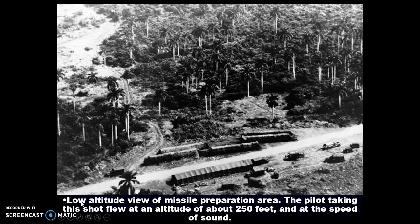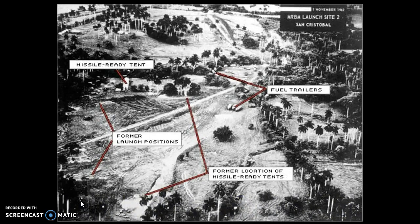Our technology has improved both in our planes and in photography, allowing us to see these details. It becomes increasingly obvious that the Cubans are receiving ICBMs — Intercontinental Ballistic Missiles — that can reach the United States if launched. They don't have to be dropped like the bombs in Hiroshima and Nagasaki.